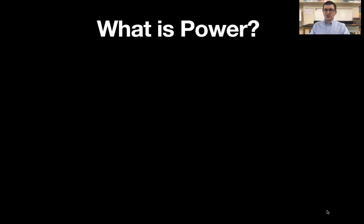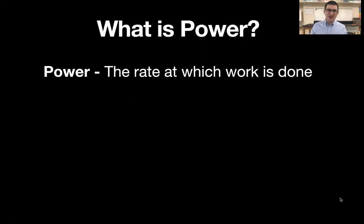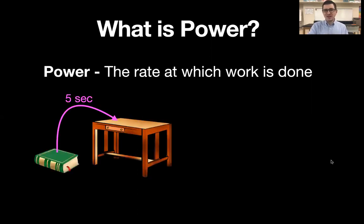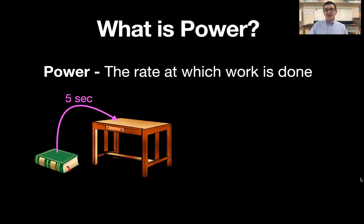So first, what is power? Power is defined as the rate at which work is done. For example, if I take a book and raise it from the floor to the top of the table, I've done a certain amount of work — I change the gravitational potential energy of the book. And if it takes me five seconds to do that, I can calculate the power based on the amount of work done over those five seconds.